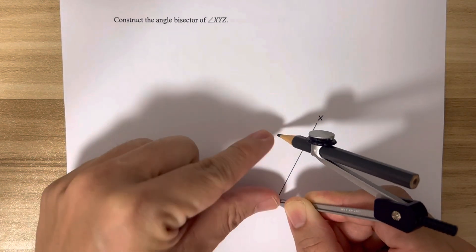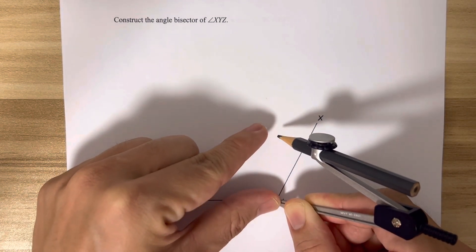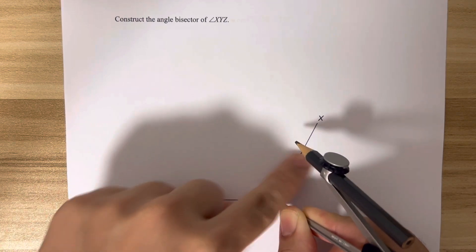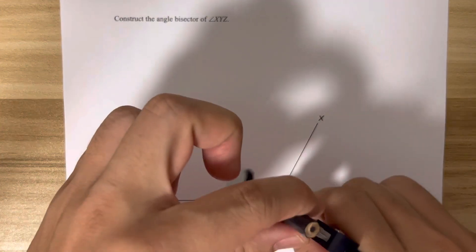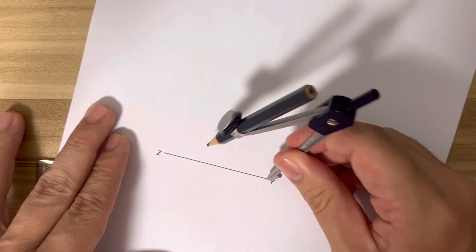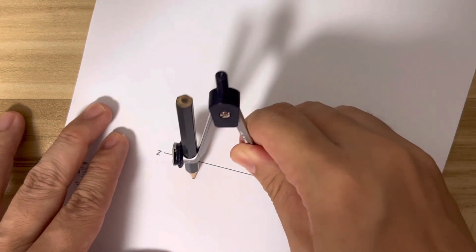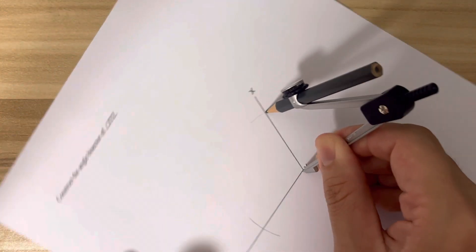Make sure that this distance here from the pointed tip to the pencil is able to cut the two lines making the angle. That's what we are going to do now. I made a cut here and I made a cut here.